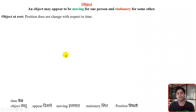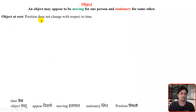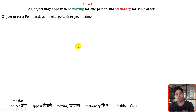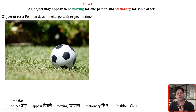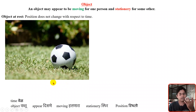There are basically two types of objects: object at rest and object in motion. First, let's study what is object at rest. For an object at rest, the position of that object does not change with respect to time — irrespective of time, the object's position remains the same. Suppose this football is on the ground.